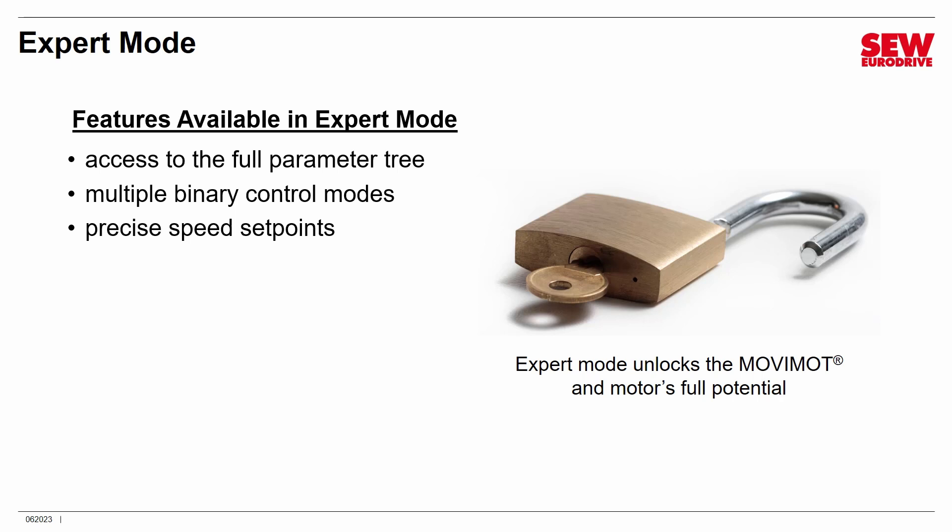You get precise speed set points. In Easy Mode, speed set points depend on the F1 and F2 dials, and you can't always set those to exact speeds. Expert Mode lets you key in an exact speed — for example, you could set 806 RPM precisely. There's also a mode that gives you access to four fixed set points instead of two, which is useful if certain applications need more than two speeds. The only way to do that is Expert Mode or RS-485 mode.